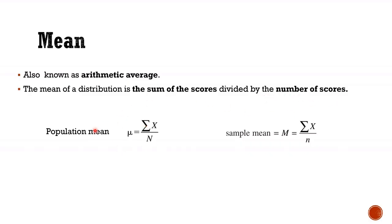We can calculate the population mean and we can also calculate the sample mean. Mean is sum of x upon n. In case of sample mean, we will denote it as small n. In case of population mean, it is capital N.